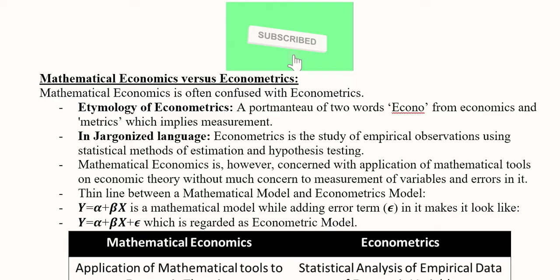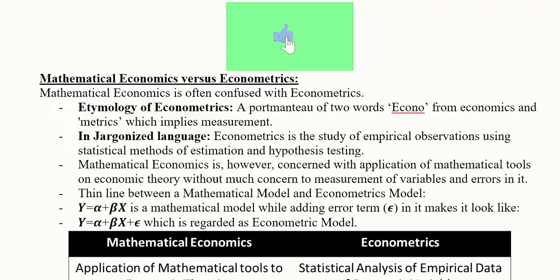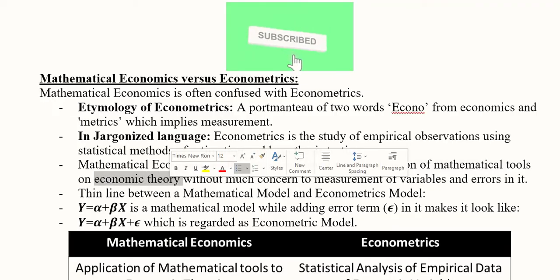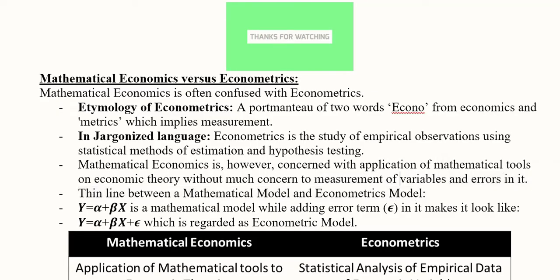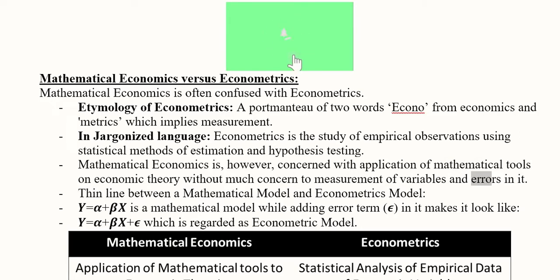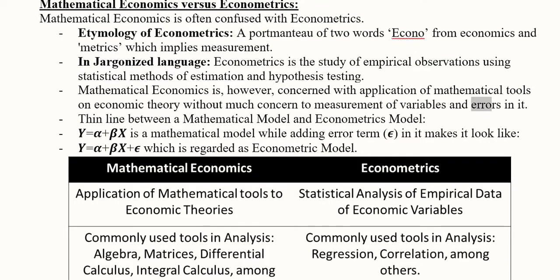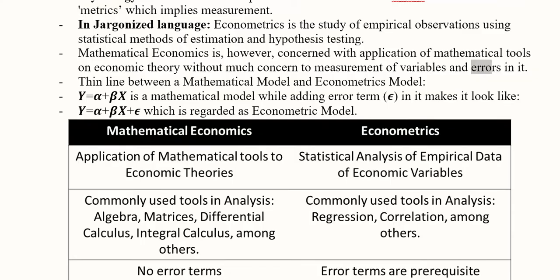Mathematical economics, on the other hand, is concerned with the application of mathematical tools to economic theory. We are not much concerned about the measurement of variables or errors in it. It is more about precision and is not concerned with errors or how we are measuring the variables. So there is a thin line between the two.